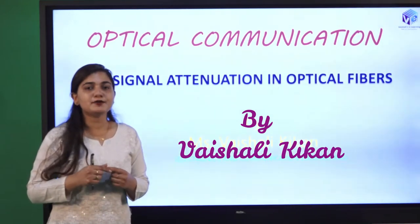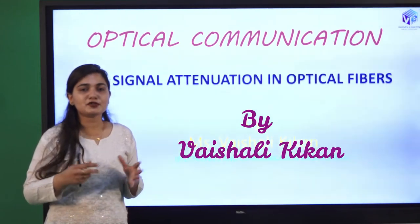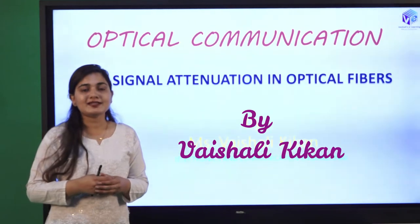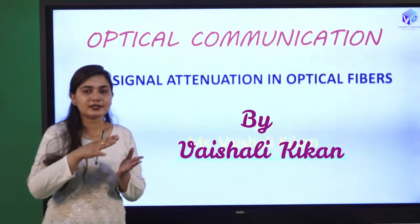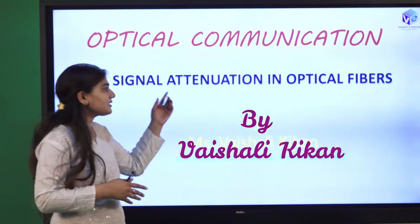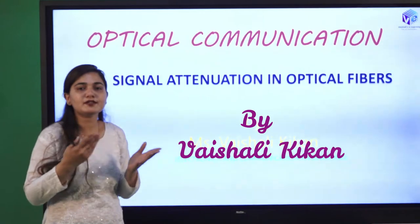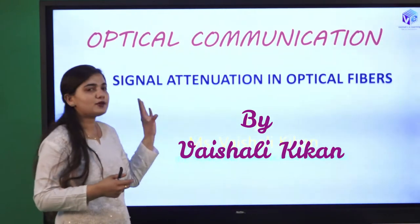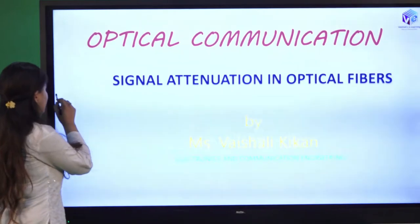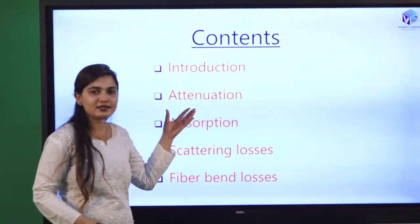We are going to understand about these losses. Due to the various obstructions given by the optical fiber, our signal gets distorted — it reduces in its amplitude. This is called signal attenuation. The amplitude is reduced due to the various losses. We are going to understand in detail about this unit, including the attenuation.